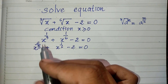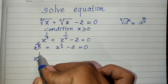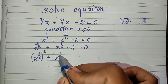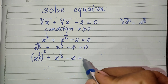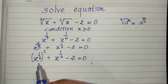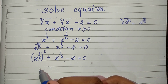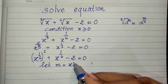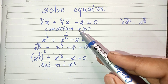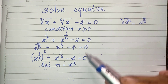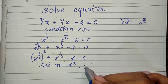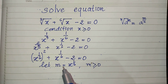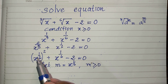We can rewrite h to the power 2/6 as h to the power 1/6 all squared. So the equation is (h^(1/6))² plus h^(1/6) minus 2 equals 0. Now we let m equal h to the power 1/6, and since h must be positive or equal to zero, m must also be positive or equal to zero.